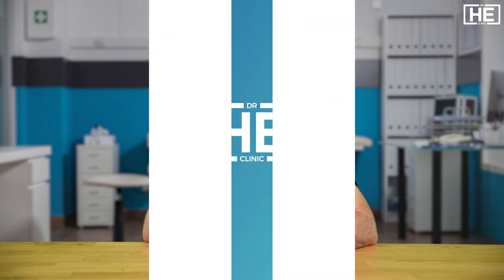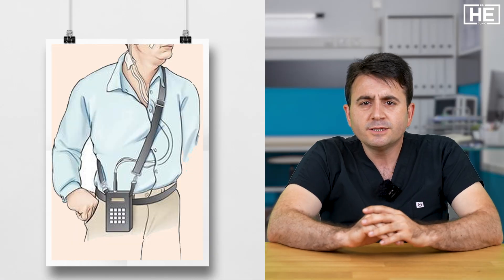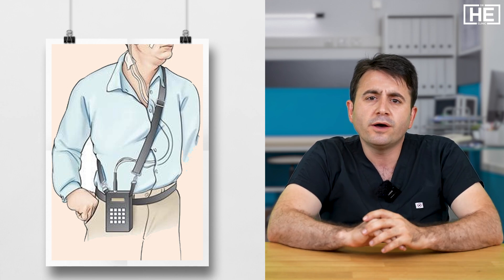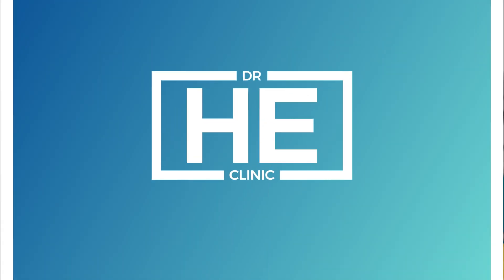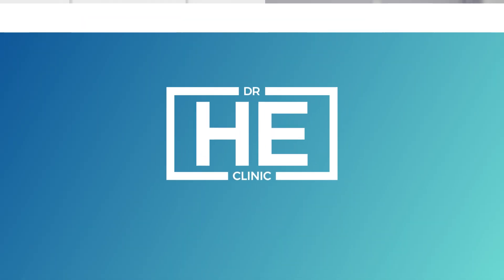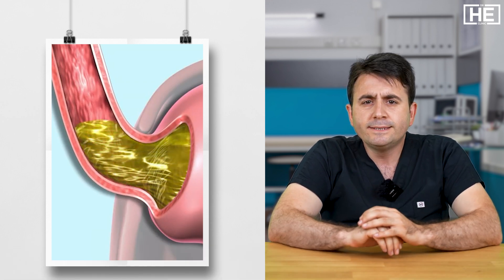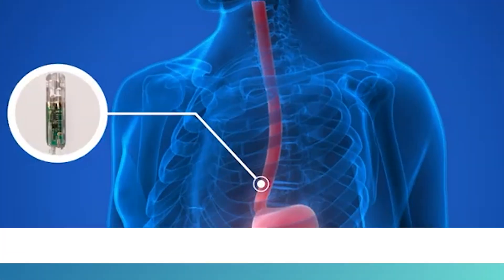Together with upper GI endoscopy, we also need a pH monitoring test. It is a test which shows the pH level in the lower part of the esophagus. Normally the pH level of that part is more than four, but if it is lower in this test, it means that the stomach acid comes there and there is a serious acid reflux. This test can be performed via endoscopy also.